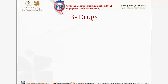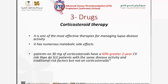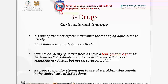Another risk factor for thrombosis in our patients is drugs — mainly corticosteroid therapy. We know that steroids are the cornerstone therapy for lupus manifestations, from arthritis up to CNS manifestations. But these drugs have numerous metabolic side effects. A lupus patient using 30 mg corticosteroid has a 60% greater two-year cardiovascular event rate than a lupus patient with the same disease activity who is not using corticosteroids. Therefore, we should minimize steroids as quickly as possible and practice using steroid-sparing agents from day one of SLE diagnosis.